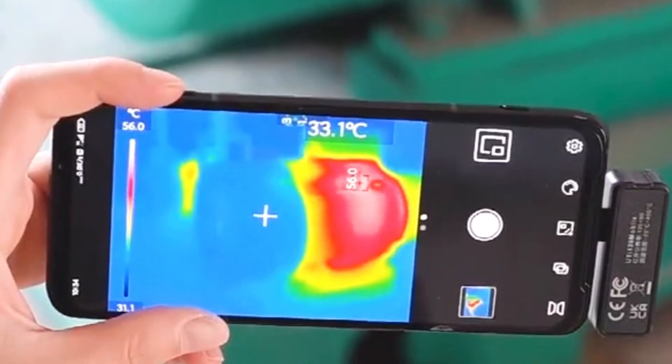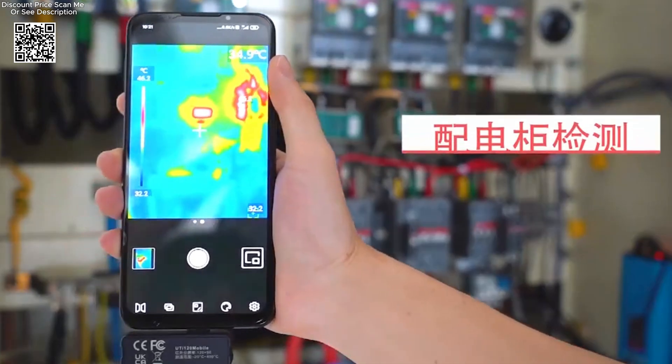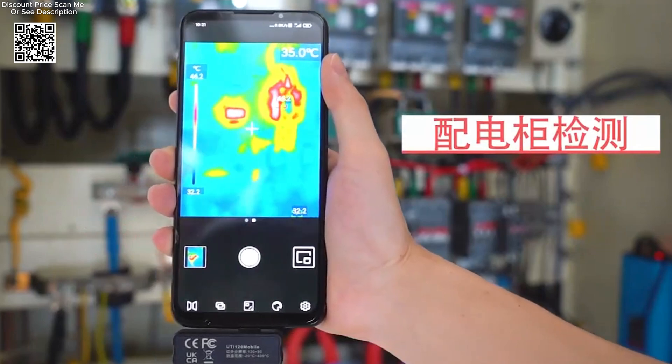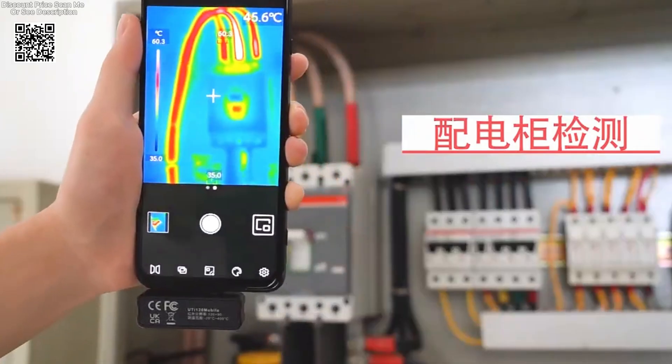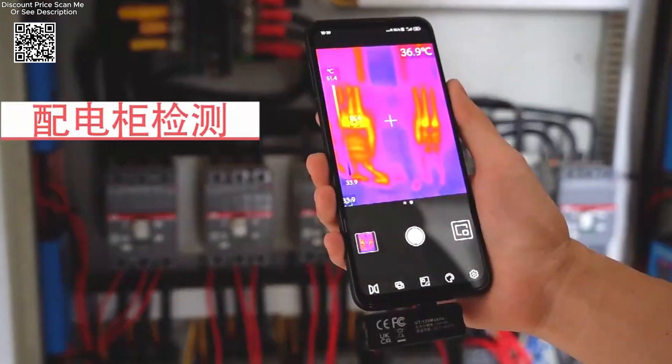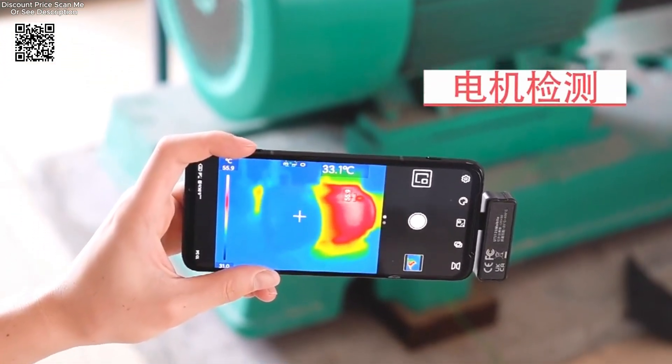The UNI-T thermal camera for mobile phones represents a significant advancement in cell phone repair technology. Whether you're troubleshooting complex circuitry or diagnosing heat-related malfunctions, the UTI-120MS and UTI-120 mobile ensure that every thermal anomaly is detected with precision and clarity.